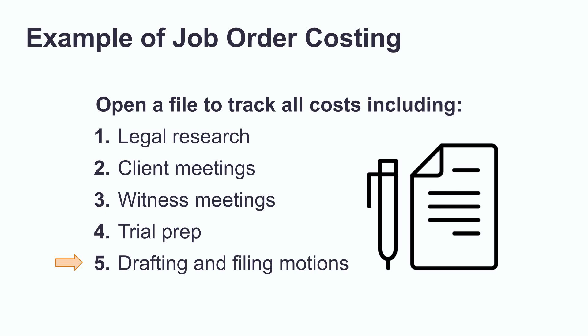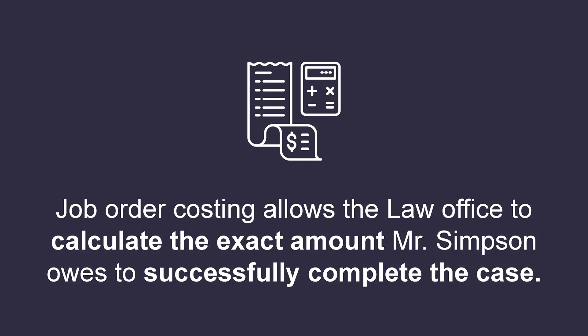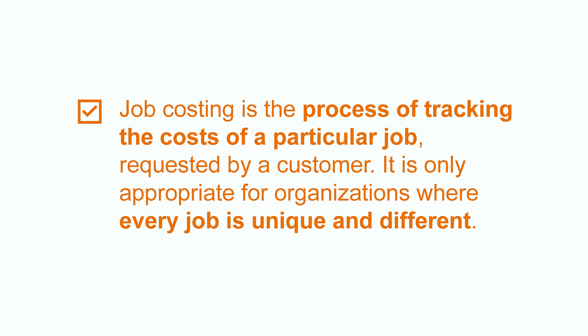Each client has a unique case, and therefore job order costing is the appropriate method to track all costs and expenses. The job order costing method is used to calculate the time and resources used for Mr. Simpson's case so that the law office can calculate the exact amount Mr. Simpson owes. Therefore, job order costing is a process of tracking the cost of a particular job requested by the customer, and it is only appropriate for organizations where every job is unique and different. Please feel free to explore more about this topic. That's it for now — until next time, goodbye, adios, and ciao.